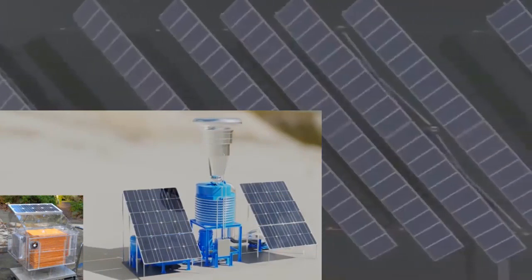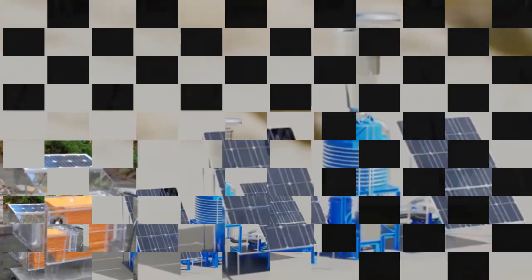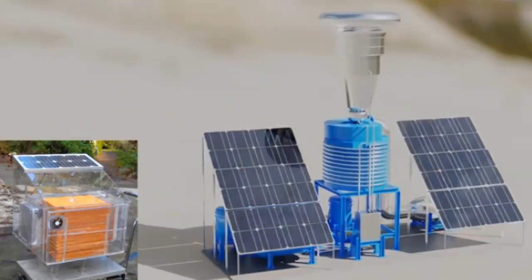The A2WH system has a patent-pending solar thermal powered design that enables it to absorb moisture from relatively dry air at a lower energy cost. The use of solar heat for condensation, without relying on refrigeration.